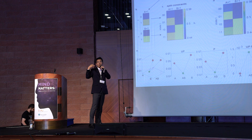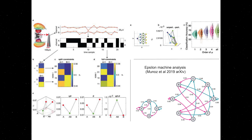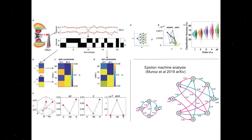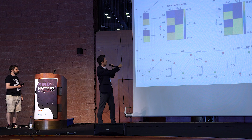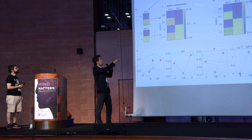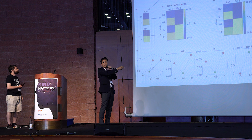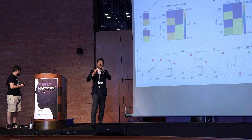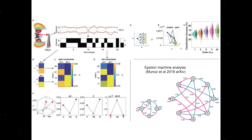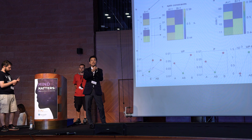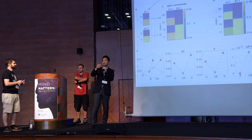To try to get the integrated information, what we do is first digitize it into zeros and ones. From that, we compute the so-called transition probability matrix. Then we compare the actually observed transition probability matrix with a fictitiously cut or independent version of the transition probability matrix.